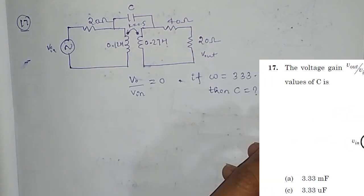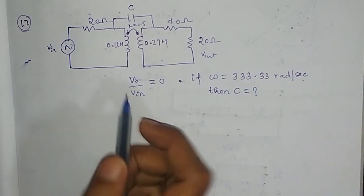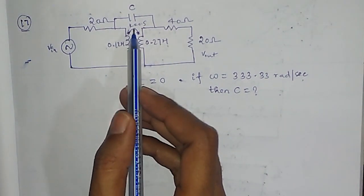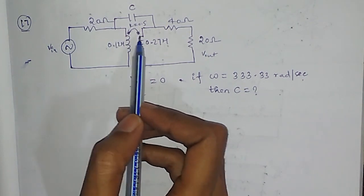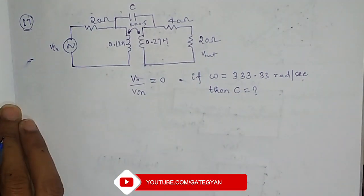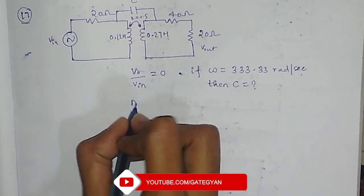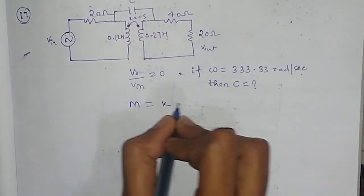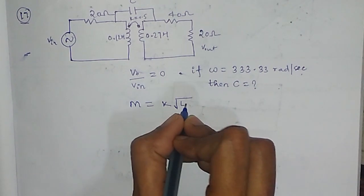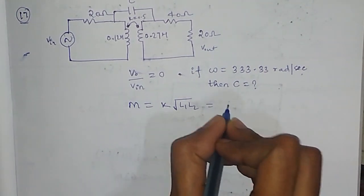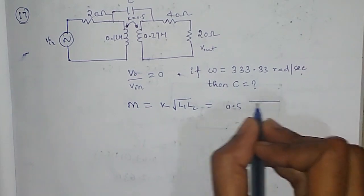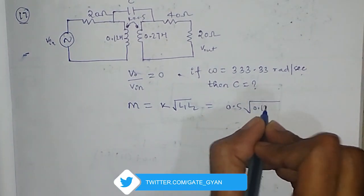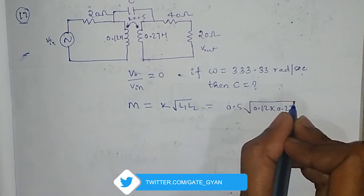We have given the mutual inductance parameter for mutual inductance between these two as 0.5. So first of all I will find the M which will be equal to K times the square root of L1 times L2. So it is going to be 0.5 times the square root of 0.12 into 0.27 and it is going to be equal to 0.09.